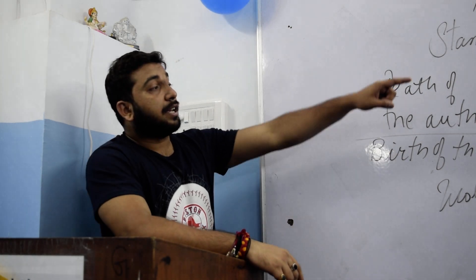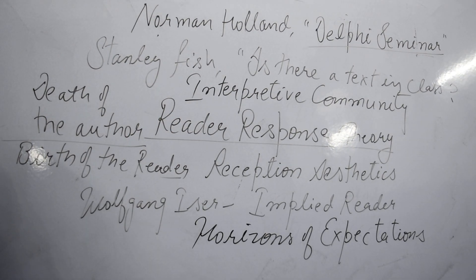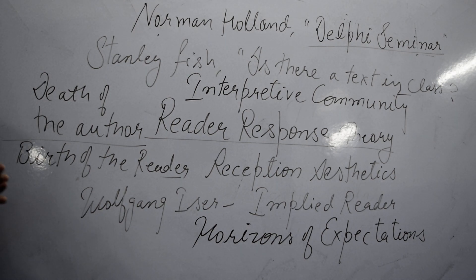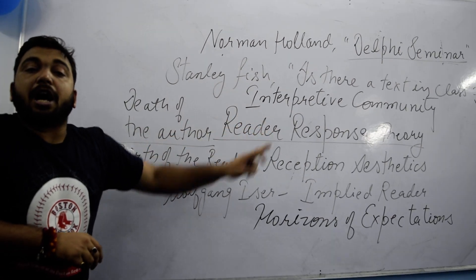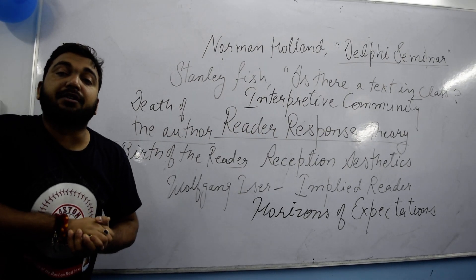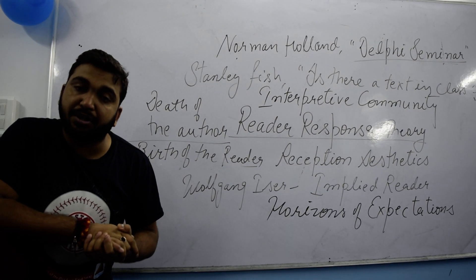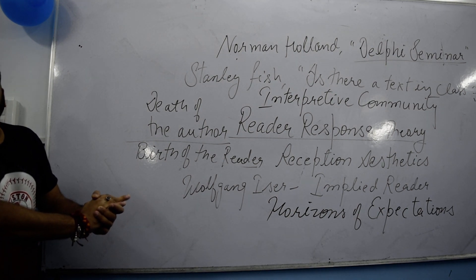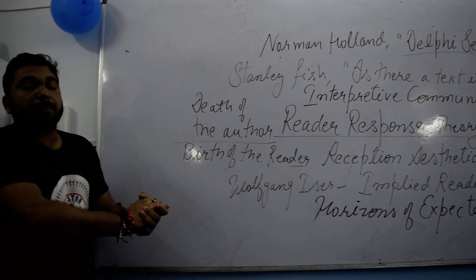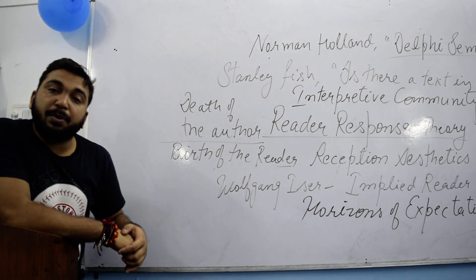The first theory is Interpretive Community. We need to understand that the reader belongs to a particular community. For example, if a reader comes from South Asian countries or from a particular religion — Hinduism, Islam, or another great religion — they will have a different kind of interpretation of any text. Let me give you a simple example: in G.B. Shaw's play 'Candida'...